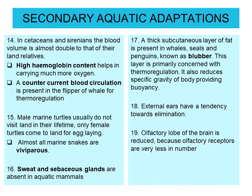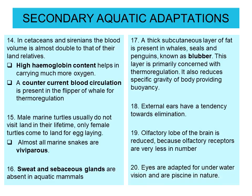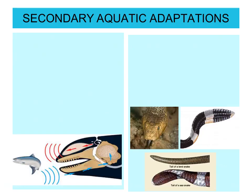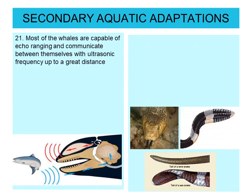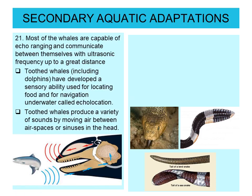External ears have a tendency towards elimination. The olfactory lobes of the brain are reduced because olfactory receptors are very few in number. The eyes are adapted for underwater vision. Most whales are capable of echoranging and communicate with each other using ultrasonic frequencies over great distances. Toothed whales, including dolphins, have developed a sensory ability used for locating food and for navigation underwater, called echolocation.